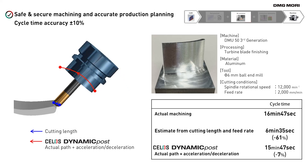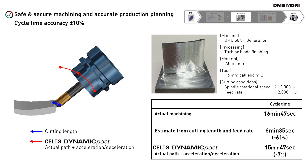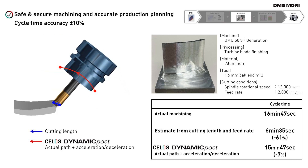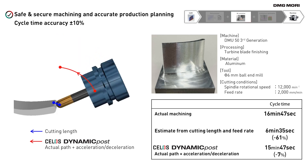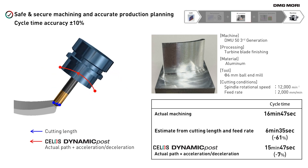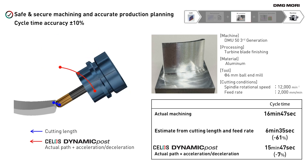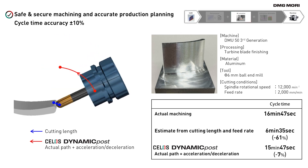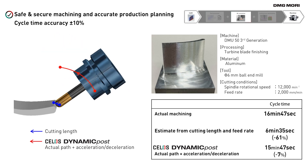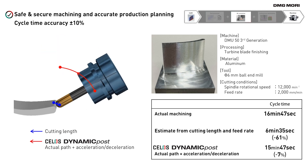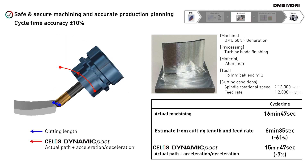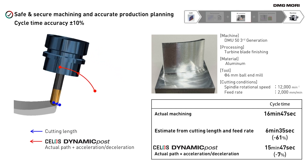Especially for simultaneous 5-axis machining, calculating cycle times from toolpaths is never easy, and the calculated cycle time often differs considerably from the actual machining time. CELOS Dynamic Post considers all linear and rotary axis movements of the machine, as well as the unique acceleration and deceleration of processes with simultaneous 5-axis machining. As a result, the calculation becomes as precise as plus or minus 10%, even for complex simultaneous 5-axis machining processes.